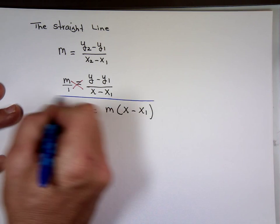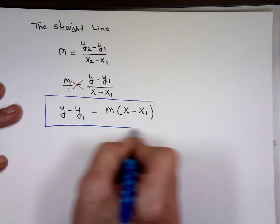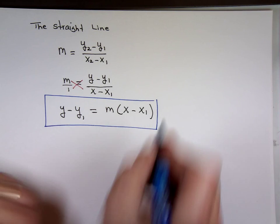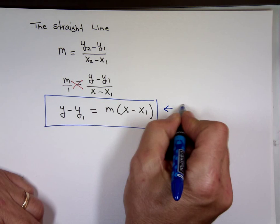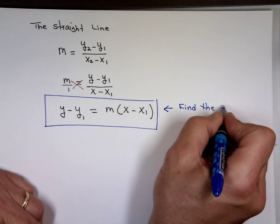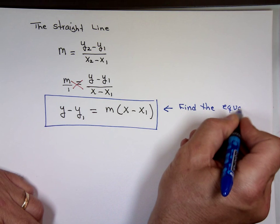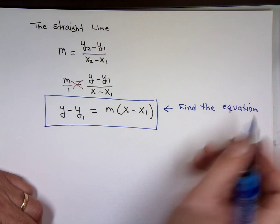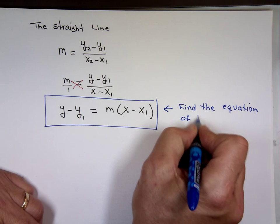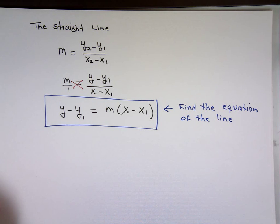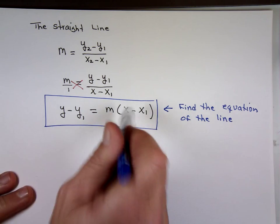This is the equation that we need. When the problem says find the equation of the line, that's what you want to use — anytime the question says find the equation of the line, you want to be thinking about this.